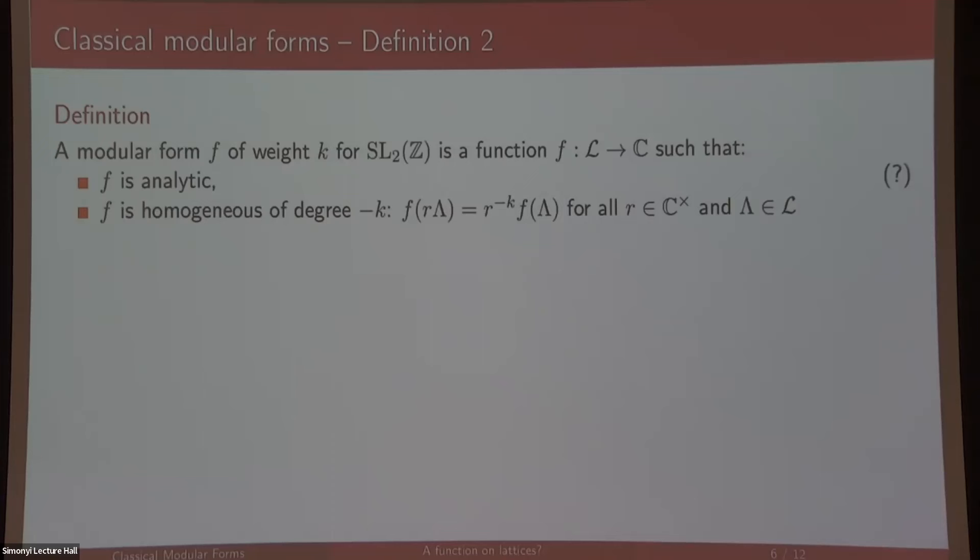And the last condition, holomorphic at the cusps, gets rephrased as saying that your value is bounded as long as the smallest non-zero element of your lattice is not too close to the origin.